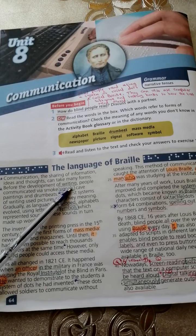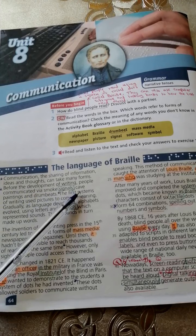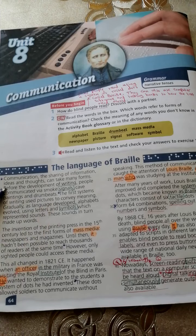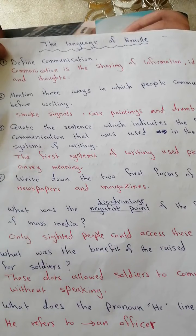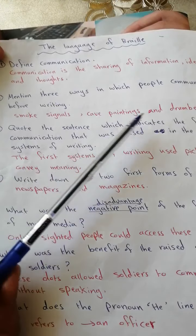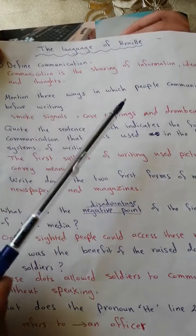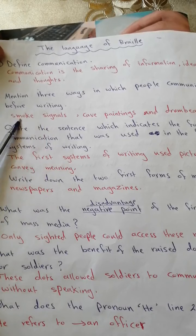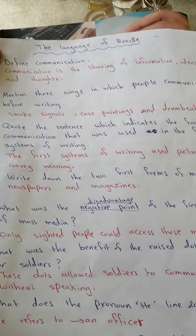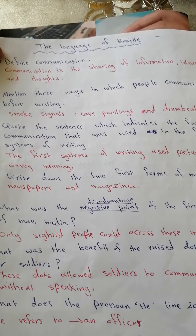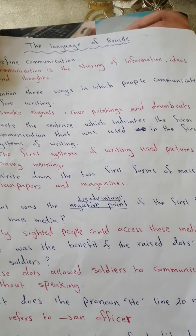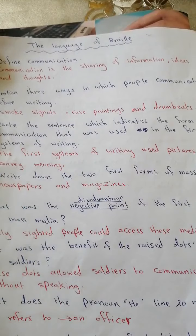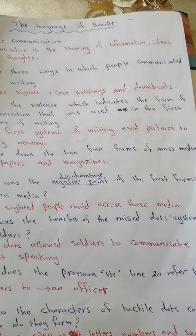Before the development of writing, people communicated via smoke signals (إشارات الدخان), cave paintings (الرسومات على الكهوف), and drum beats (قرع الطبول). The question here: mention three ways in which people communicated before writing. These are the three examples of how people were communicating in the past before inventing writing.